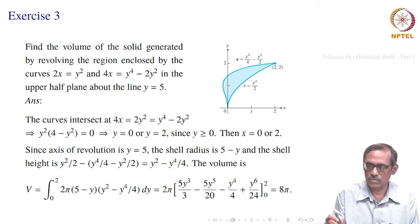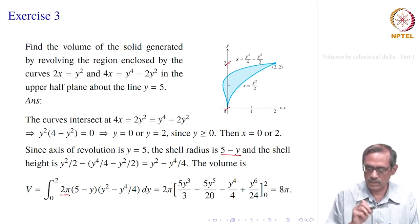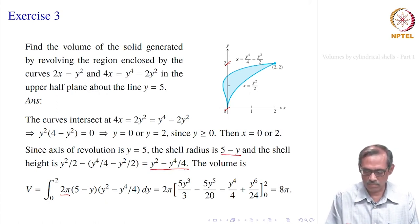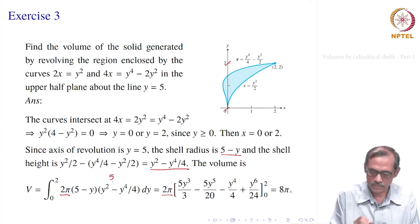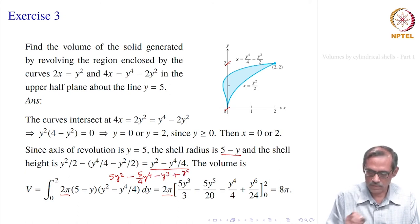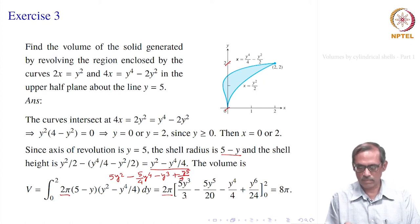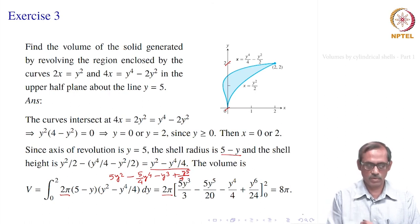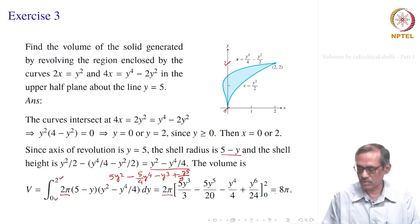The volume is ∫₀² 2π · (5 − y) · (y² − y⁴/4) dy. Multiplying out: 2π ∫₀² (5y² − 5y⁴/4 − y³ + y⁵/4) dy. Integrating: 5y³/3 − (5/20)y⁵ − y⁴/4 + y⁶/24, evaluated at 0 and 2, which simplifies to 8π.